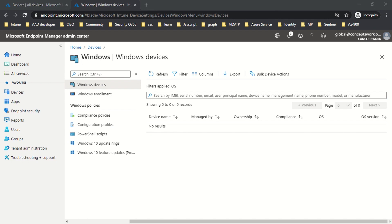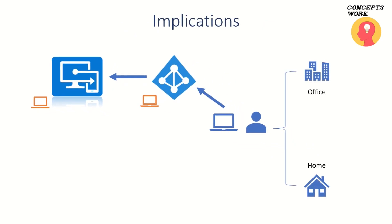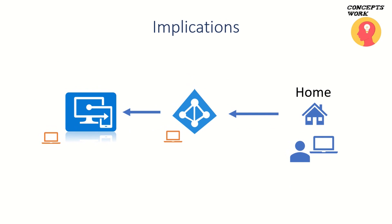Now let's understand the business implications of this feature. Consider a scenario where you shipped a laptop to a user who enrolled it — the device is in Azure AD, compliant, conditional access is working, and everything is in place, whether they're in the office or working from home. Then, in between, you create a policy to block personal devices.